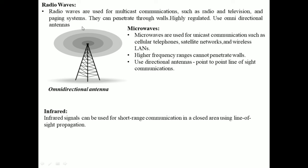Radio waves can penetrate through walls. They are highly regulated and use omnidirectional antennas, which transmit signals in all directions.